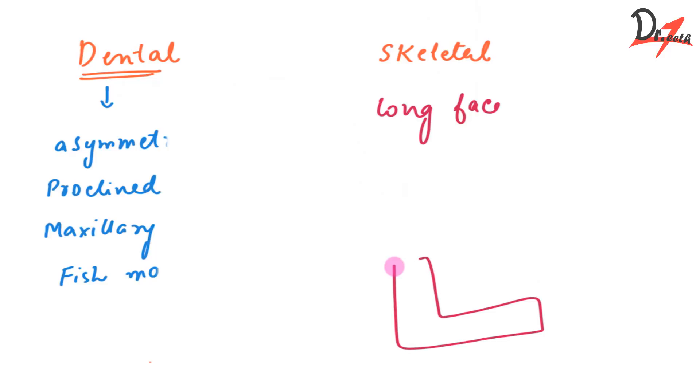So let us suppose this is our mandible and this is our maxilla. So skeletal anterior open bite, it could be because of either this maxilla can rotate upward or the mandible can rotate downward or due to combination like this was happening together with this.